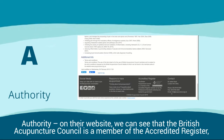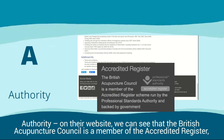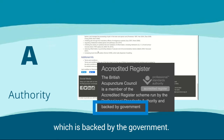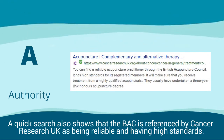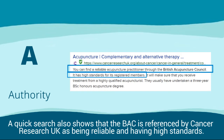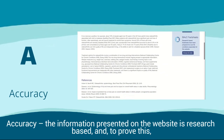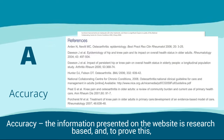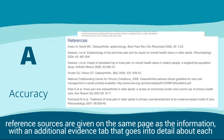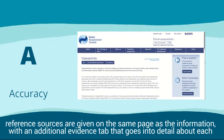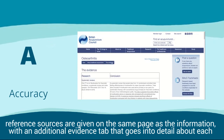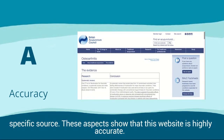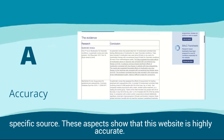Authority: on their website, we can see that the British Acupuncture Council is a member of the accredited register, which is backed by the government. A quick search also shows that the BAC is referenced by Cancer Research UK as being reliable and having high standards. Accuracy: the information presented on the website is research-based, and to prove this, reference sources are given on the same page as the information, with an additional evidence tab that goes into detail about each specific source. These aspects show that this website is highly accurate.